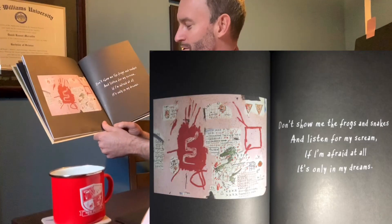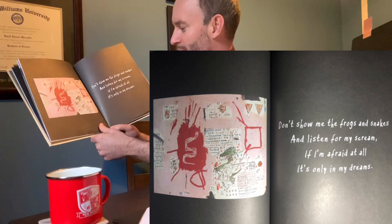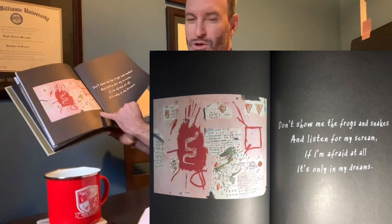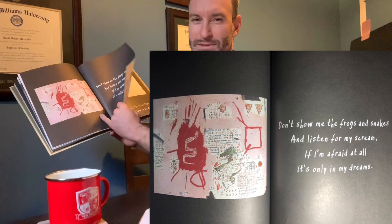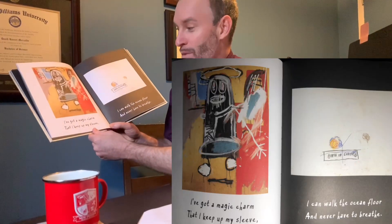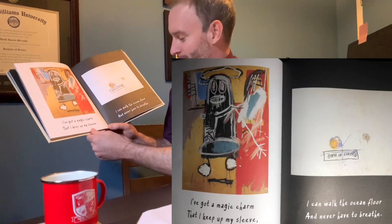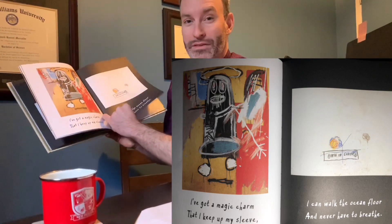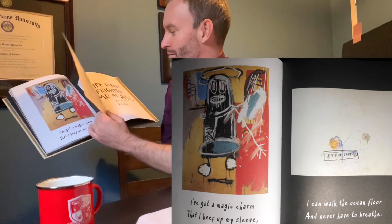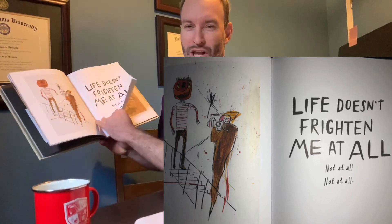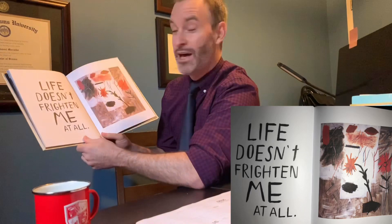Don't show me the frogs and snakes and listen for my scream. If I'm afraid at all, it's only in my dreams. I've got a magic charm that I keep up my sleeve. I can walk the ocean floor and never have to breathe. Life Doesn't Frighten Me at all. Not at all. Not at all. Life Doesn't Frighten Me at all.